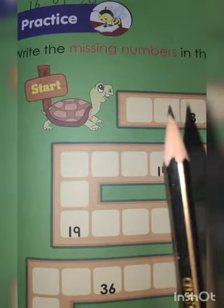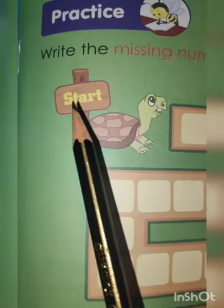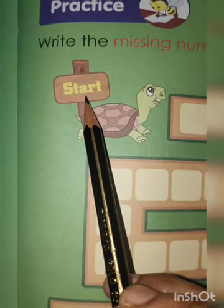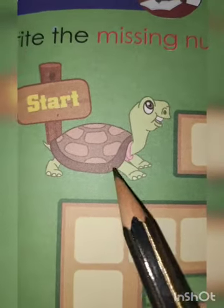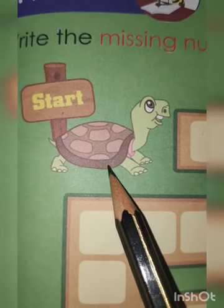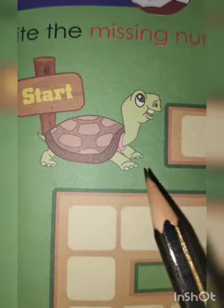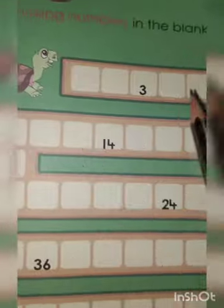So this is your homework. What is this? This is starting point. Okay. And who is this? Very good. This is tortoise. So you have to reach the tortoise.